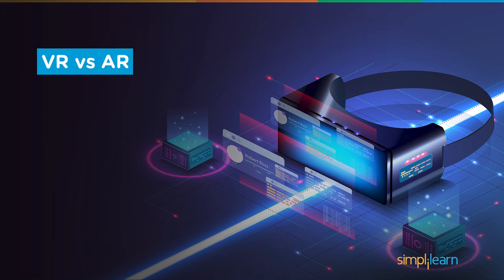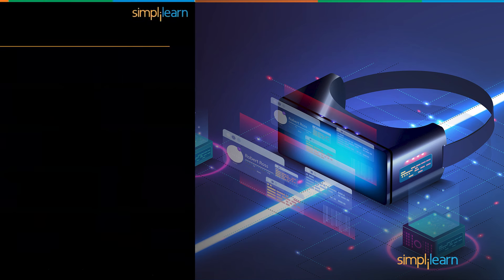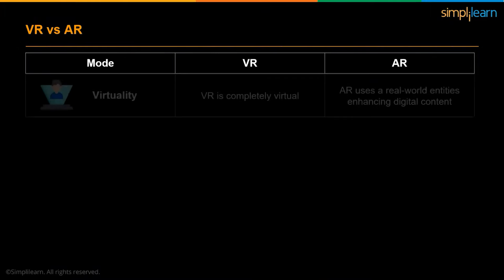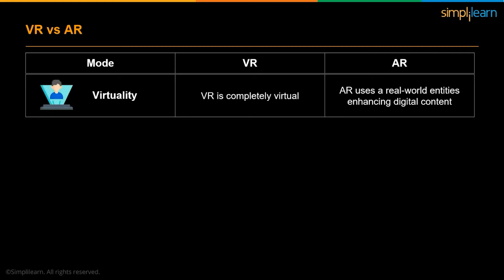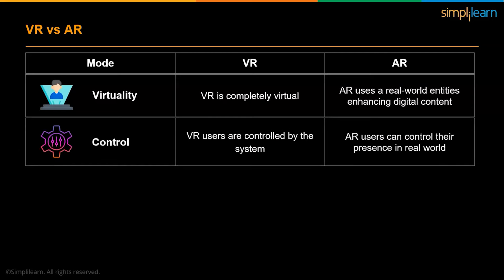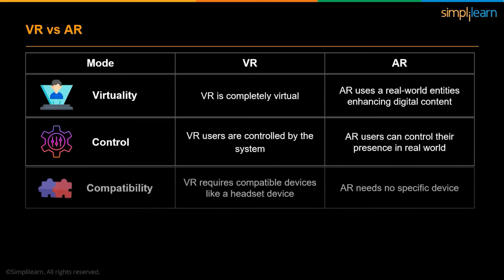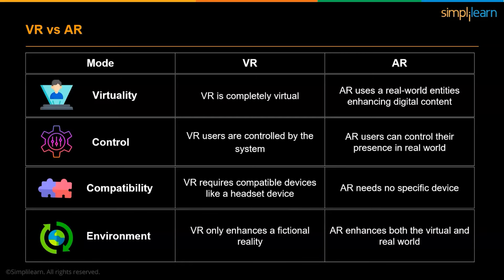We'll now move towards the most important part of the module: VR vs AR. VR is completely virtual in its environment, while AR uses real-world entities — a combination of both virtual and real elements. VR users are controlled by the system as syncing of the environment plays a major role in real-time, whereas AR users can control their presence in the real world. VR requires compatible devices like a headset, whereas AR is accessible right from your smartphone. VR only enhances a fictional reality composed of a specifically designed environment, whereas AR enhances both virtual and real-world environments.